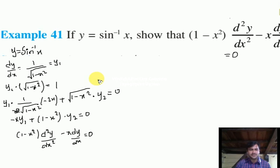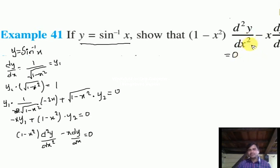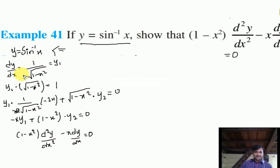One of those problems will be: y = sin⁻¹(x), then show that (1 - x²) d²y/dx² - x dy/dx = 0. Here d²y/dx² is y₂ and dy/dx is y₁. So y = sin⁻¹(x); if you differentiate it, you get dy/dx = 1 / √(1 - x²).